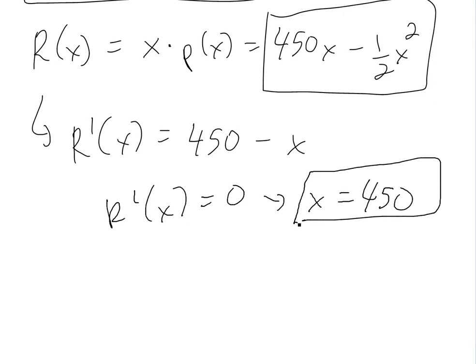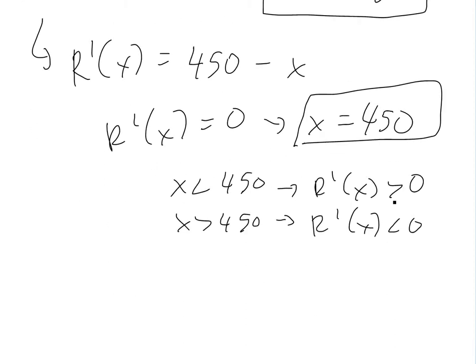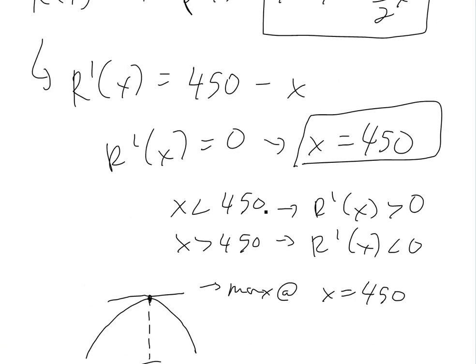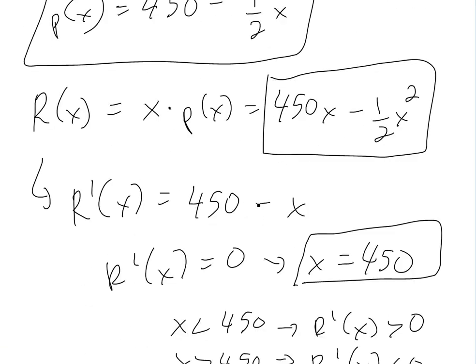This is a critical point. When X is less than 450, the derivative is greater than 0. When X is greater than 450, the derivative is less than 0. This means you're increasing then decreasing. Since this is a parabola going downward, we have a maximum at X = 450.